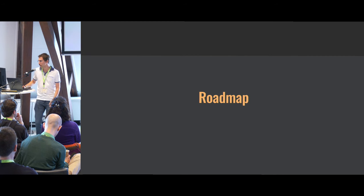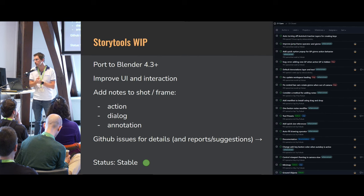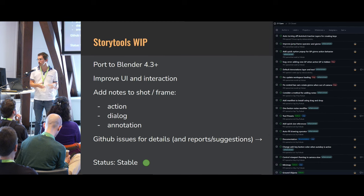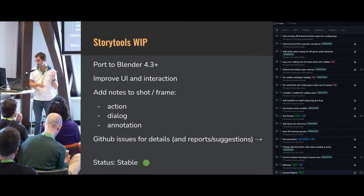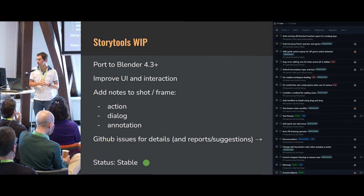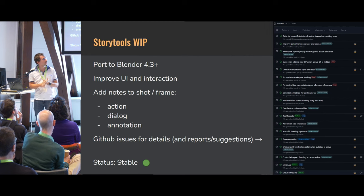About the Story Tools roadmap: it's still work in progress but stable — you can already use it, it's on GitHub. The next targets are porting to Blender 4.3, improving UI interaction, and adding notes to shot frames, because we need that for storyboarding.